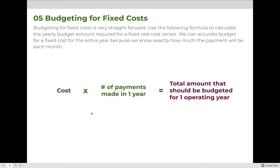When we budget for fixed costs it's very straightforward. Using the following formula, we can accurately budget for a fixed cost for the entire year because we know exactly how much each payment will be. We take the cost and multiply it by the number of payments made in a year — times 12 if monthly, times 4 if quarterly, times 1 if annual — and that gives us the total amount to budget for the entire year.